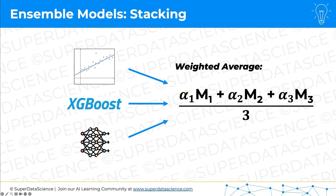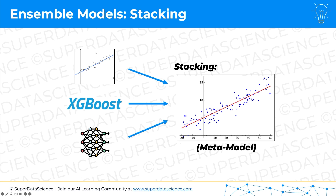An even more advanced approach is a technique called stacking, where rather than a simple or weighted average, we use a meta model. The three original models are called the base models — they create predictions, and then the meta model uses those predictions, is trained on them, and creates its own output, which is the final output. That's what stacking is all about: base models and then a meta model.